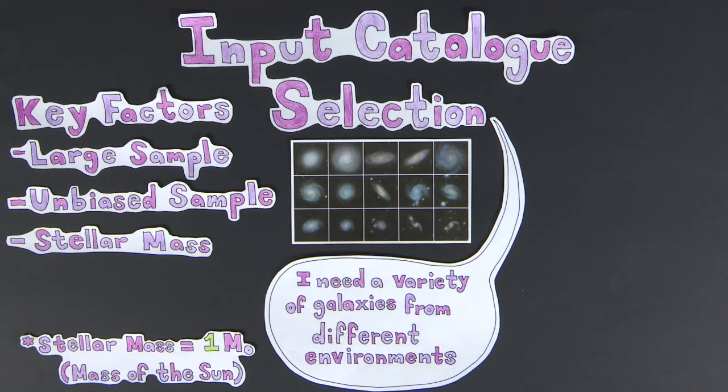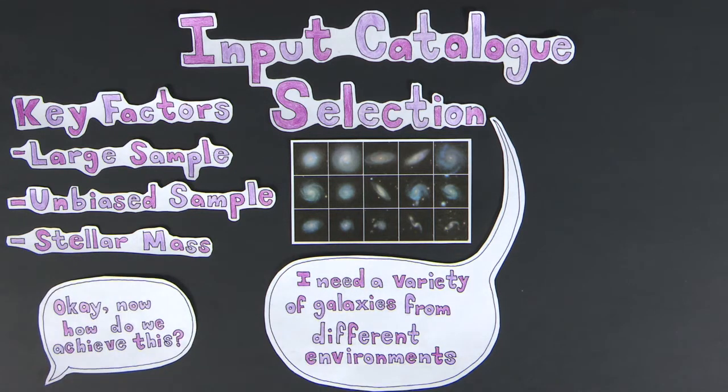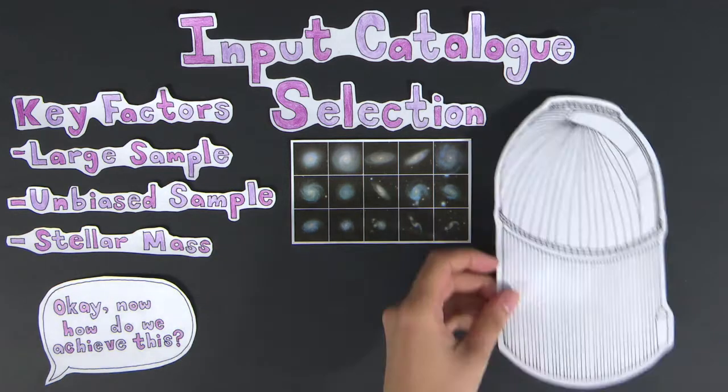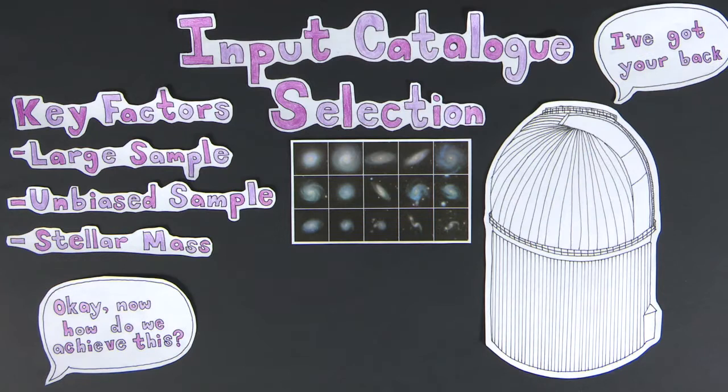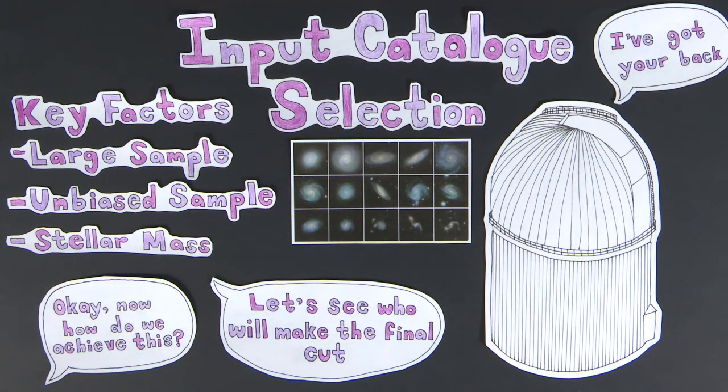In order for SAMI to target galaxies over a range of masses and environments, we must already know the properties of a large number of galaxies and where they reside in the universe. Fortunately, a previous survey conducted at the Anglo-Australian Telescope, the AAT, has already conducted the bulk of measurements necessary for building an input catalogue for the SAMI survey.